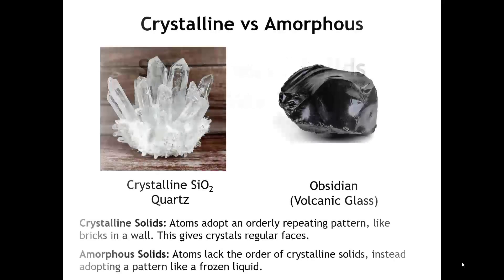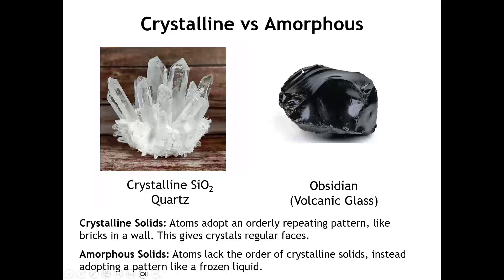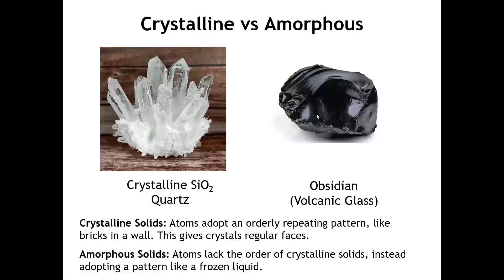In this lecture, we're going to take a closer look at the structures of solids. Broadly speaking, we can categorize solids into one of two groups: those that have a crystalline structure, like the quartz polymorph of SiO2, and amorphous solids, which we associate with things like glasses or polymers. Here we have a sample of obsidian, also referred to as a volcanic glass, because when magma from a volcano cools very rapidly, the atoms are not able to adopt a crystalline pattern before they freeze.